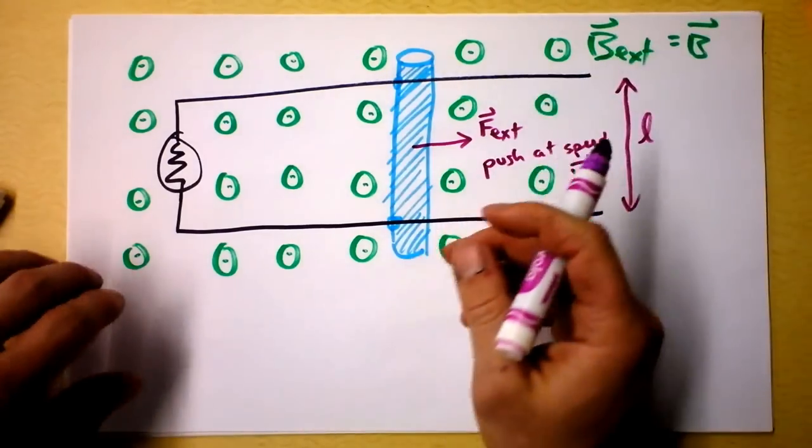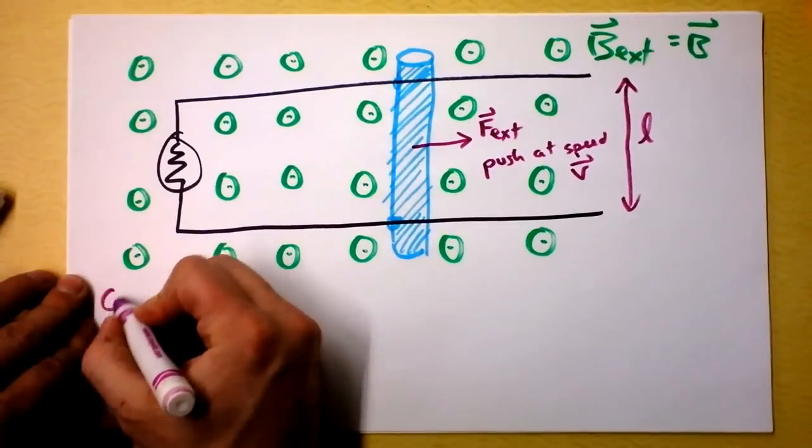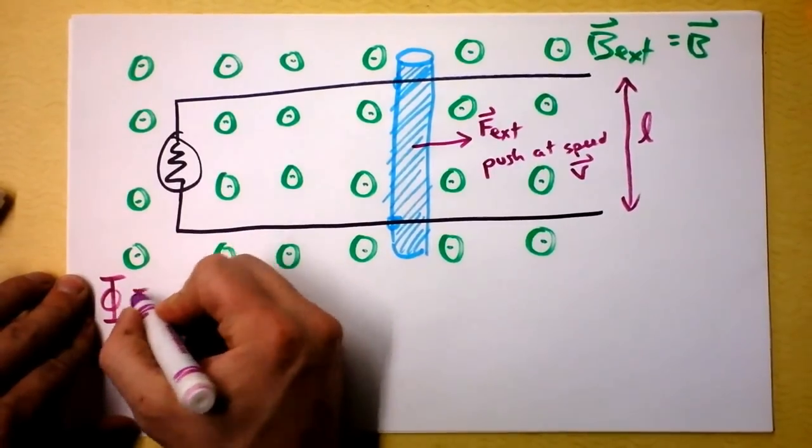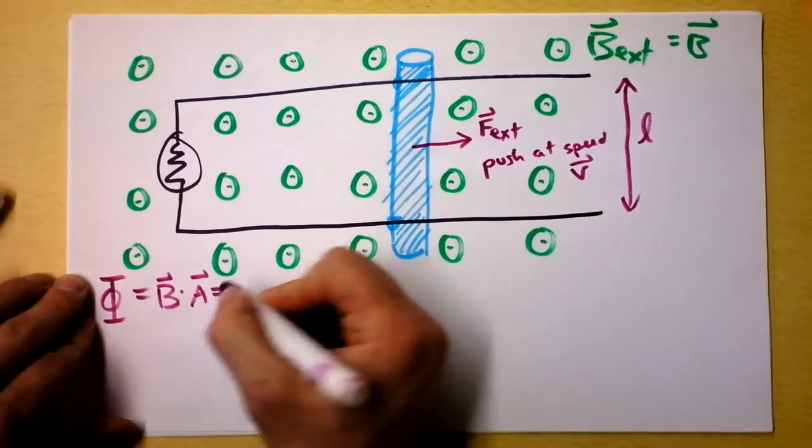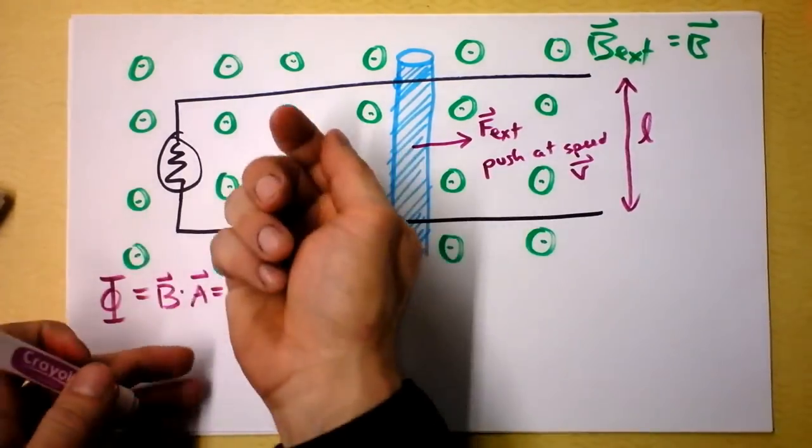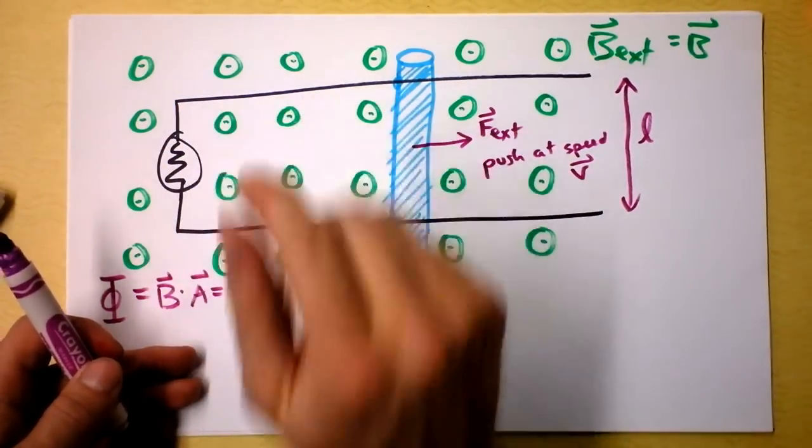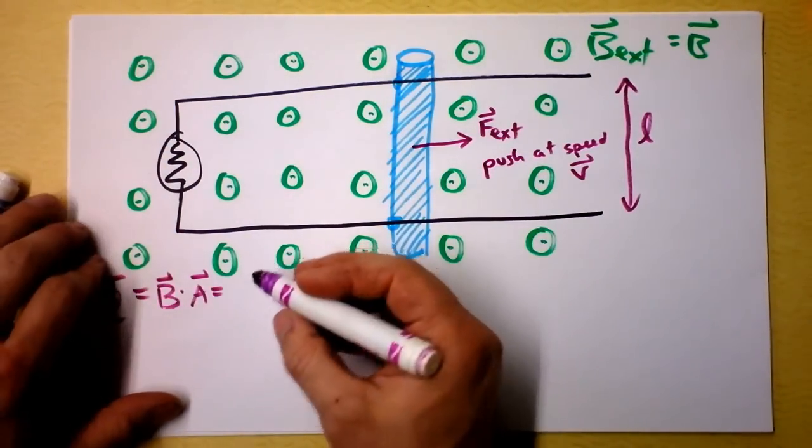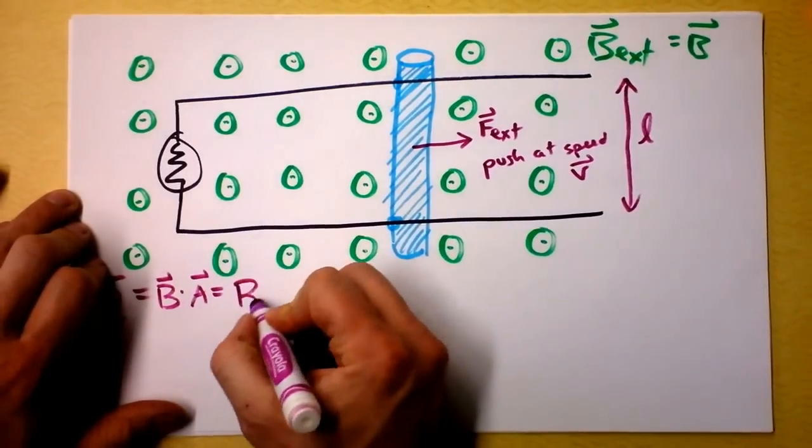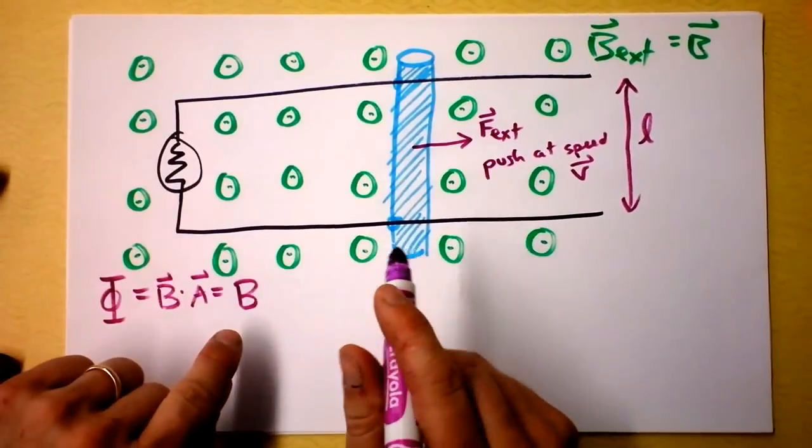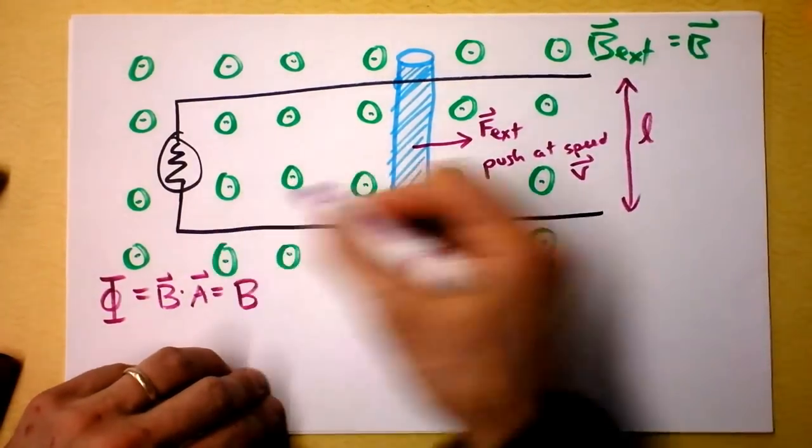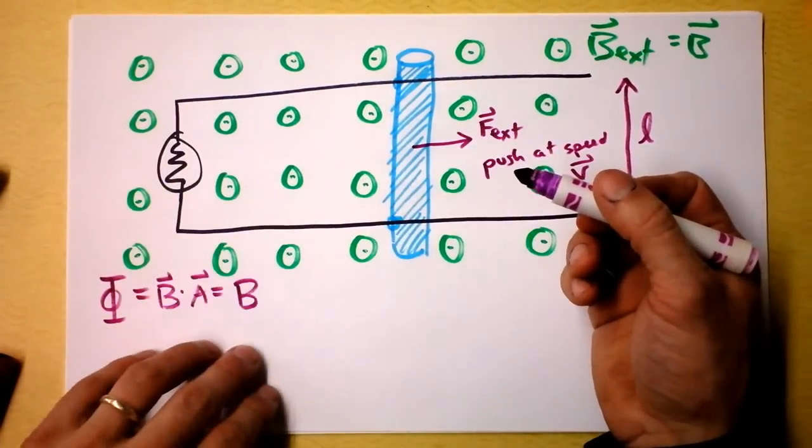So my first argument is that flux at this instant right here is magnetic field dotted into area. Notice that the magnetic field is pointing this way and the area is pointing this way or that way so we don't have to do any cosines. But I'm finding that to be magnetic field times area, but the area is the length times the width. But the width is changing all the time.